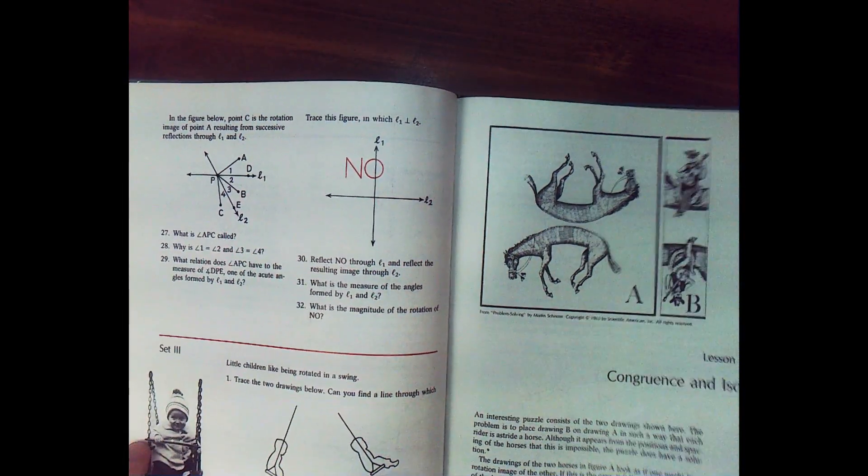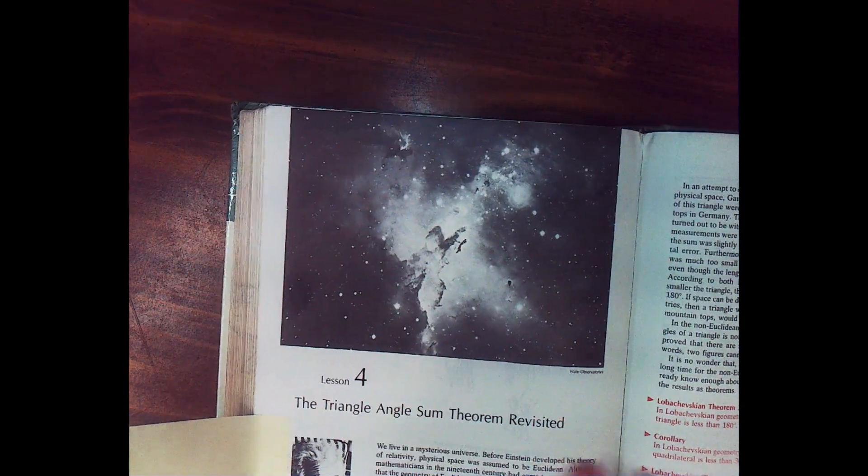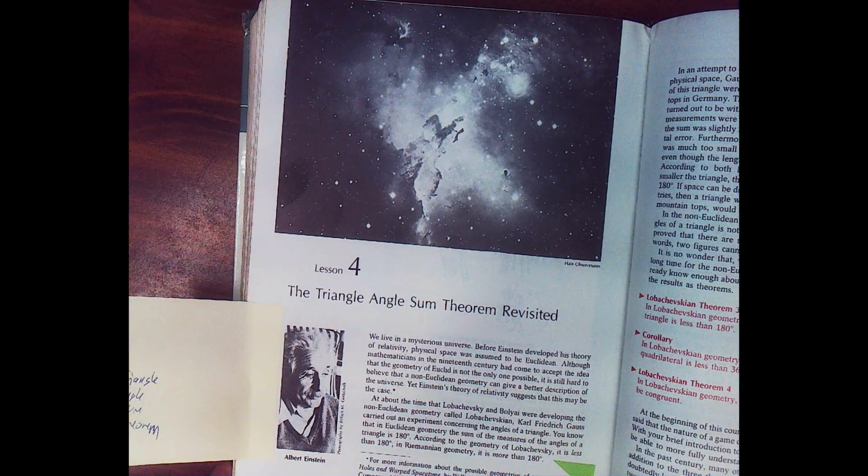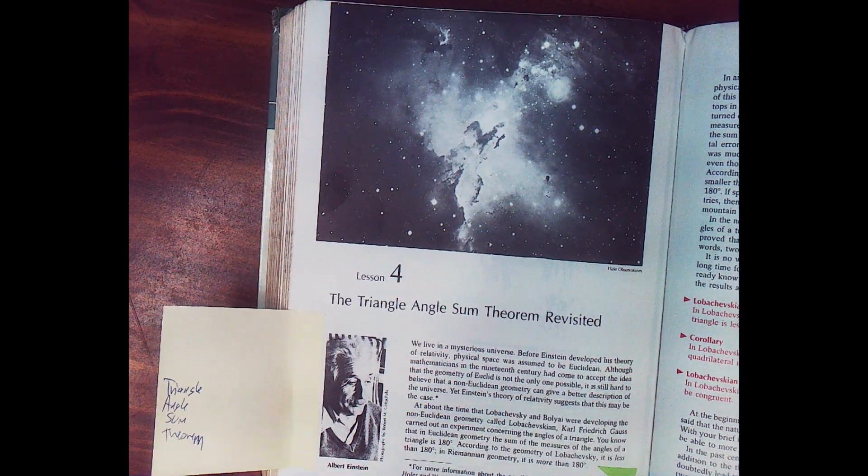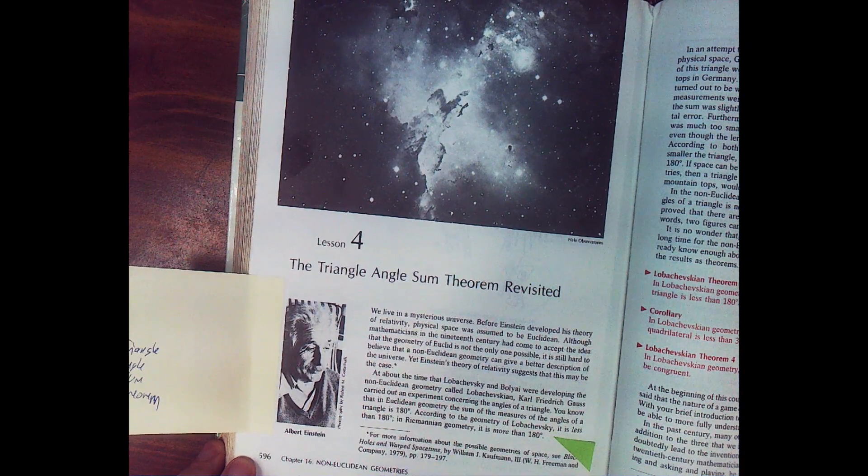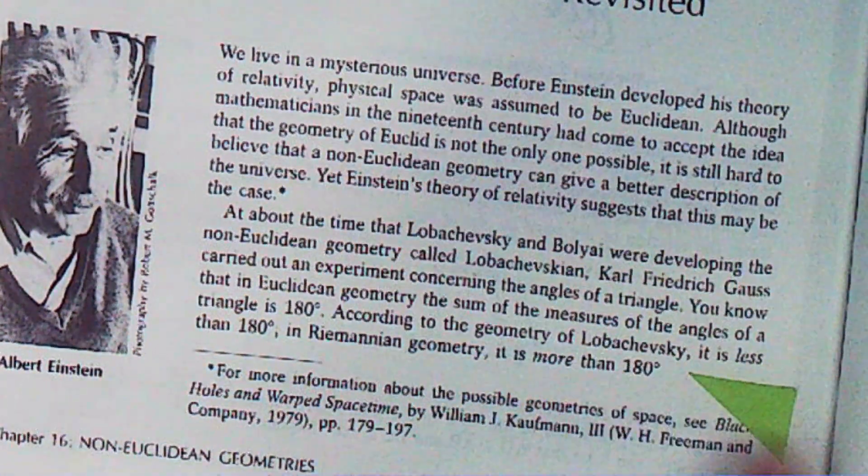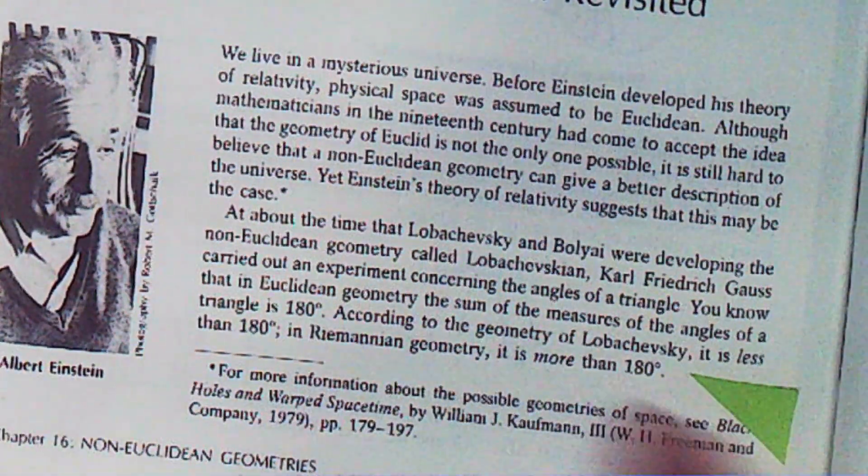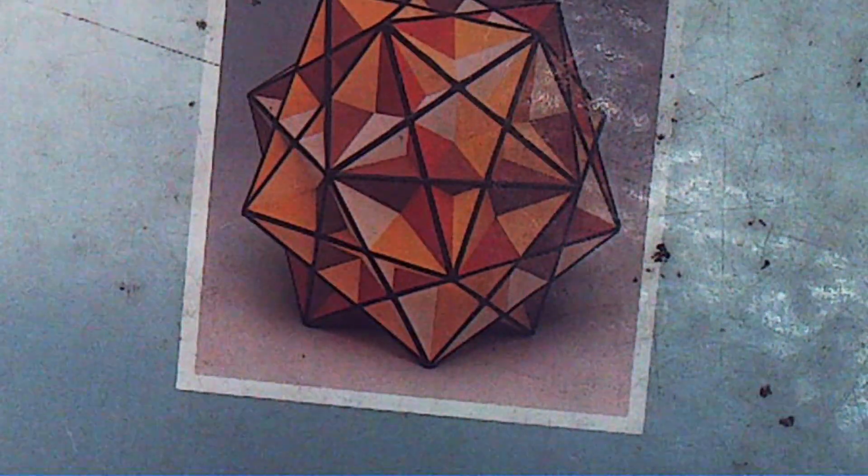And he has an interesting chapter or a lesson here called The Triangle Angle Sum Theorem Revisited, which means the three angles of a triangle add up to 180, unless you're dealing with non-Euclidean geometry. So the geometry of Lobachevsky, it's less than 180, and Riemann, it's more than 180. So I thought you might find that a little interesting.